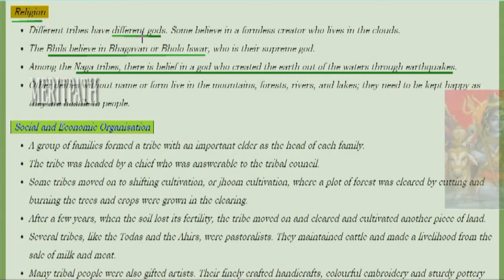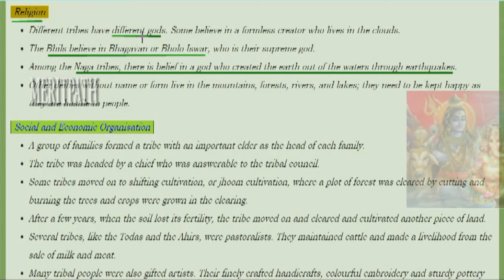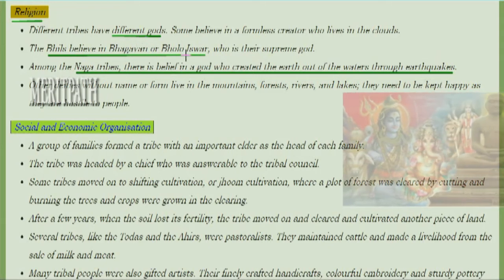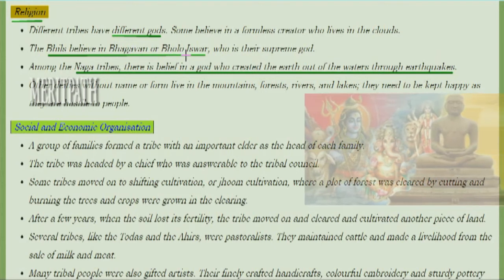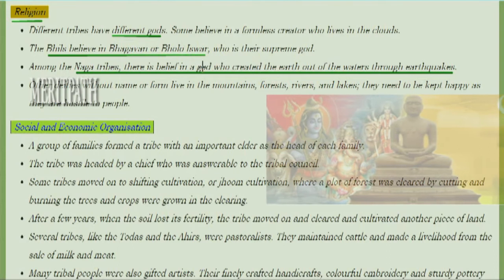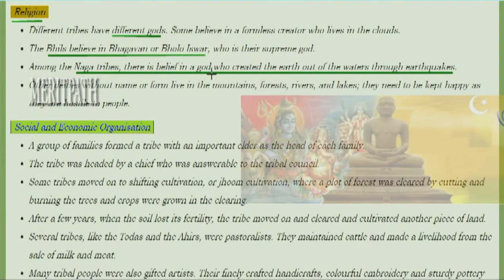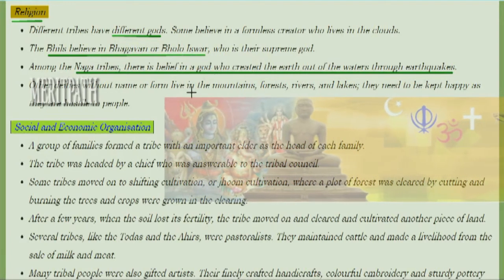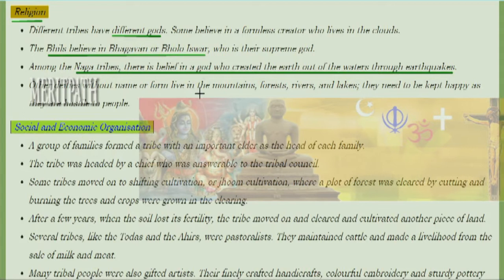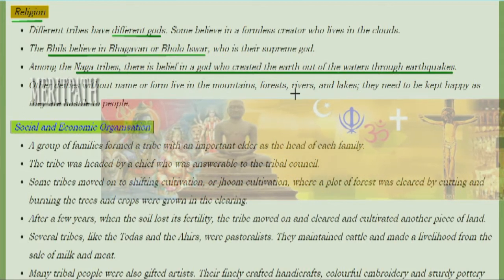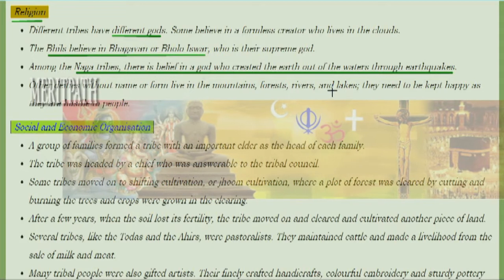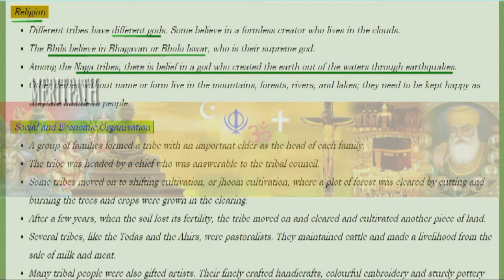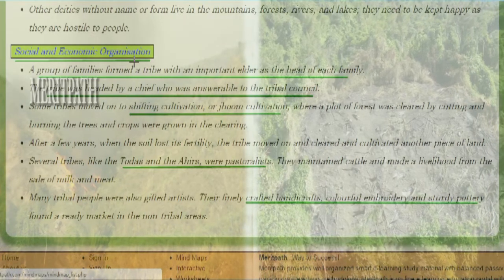Tribal people believed in different gods. Some believed in a formless creator who existed in the clouds. The Bhil group believed in a Bhagwan or Bholo Ishwar as their supreme god. The Naga tribes believed in a god who created the earth out of water through earthquakes. Other deities without name or form were believed to live in mountains, forests, rivers, and lakes, and needed to be kept happy as they provided all resources to the people.